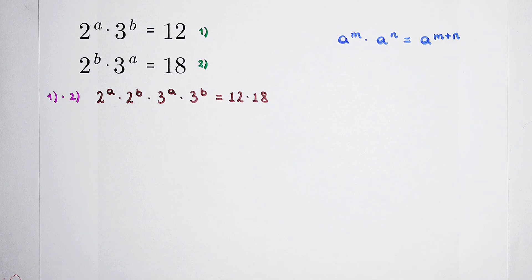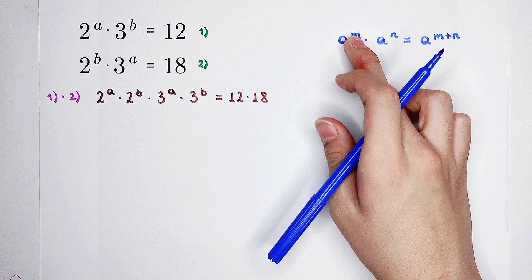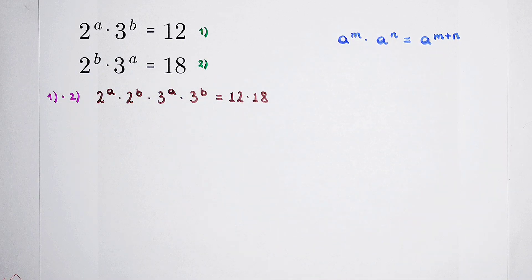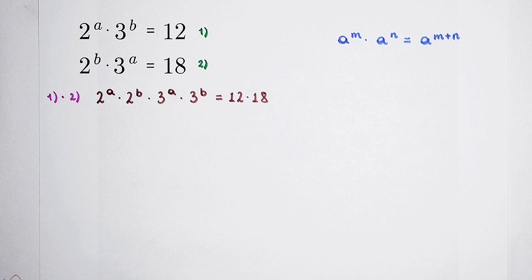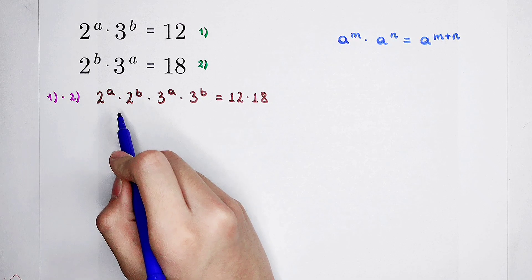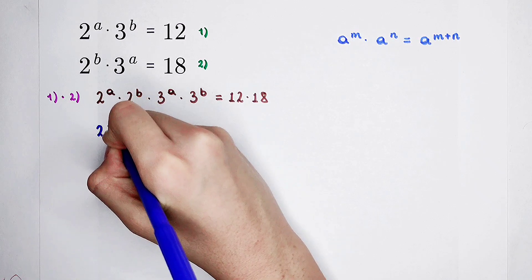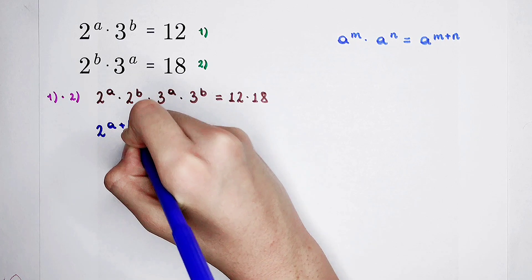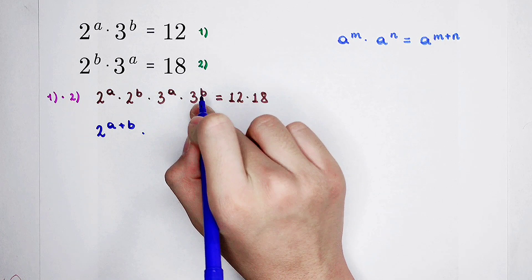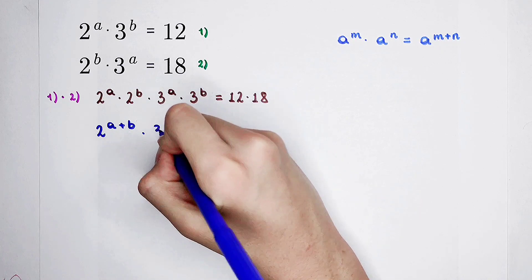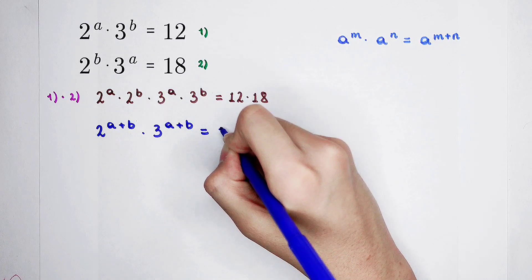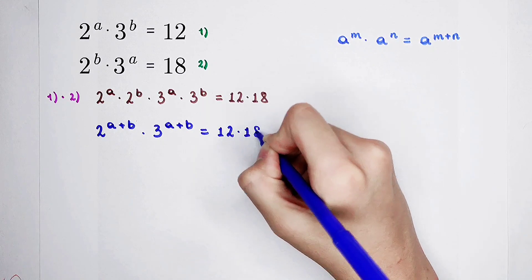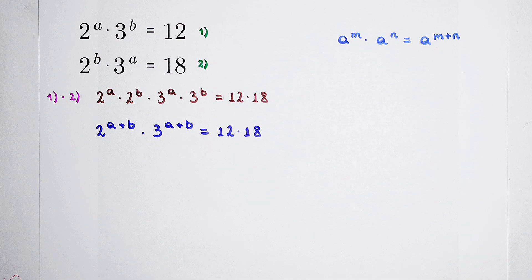I'll write x instead of a in the formula since it is very confusing. This is only the formula and this is our problem — don't get confused. By using this formula: 2 to the power of a times 2 to the power of b is 2 to the power of a plus b. They also have the same base, so it is 3 to the power of a plus b, equal to 12 times 18.